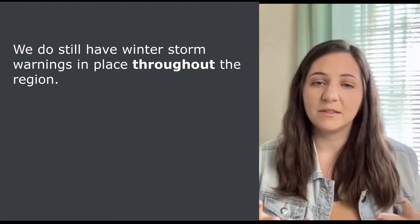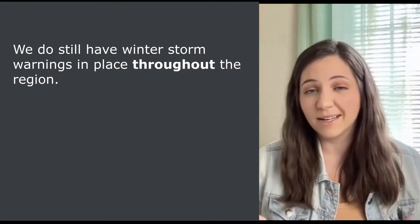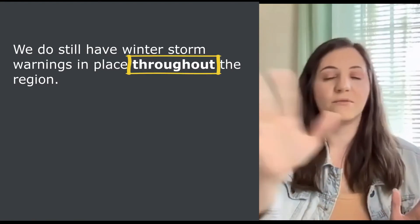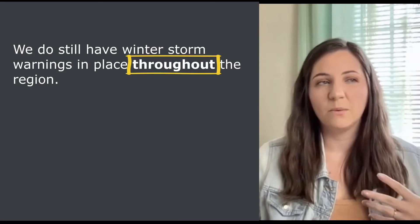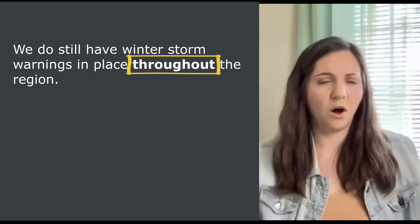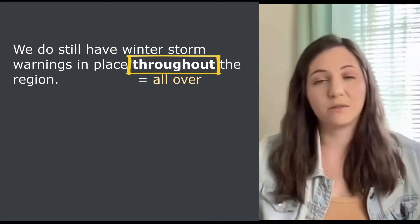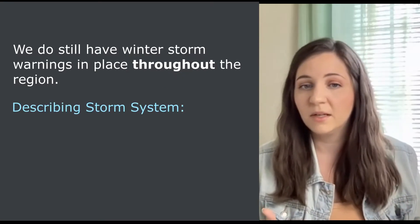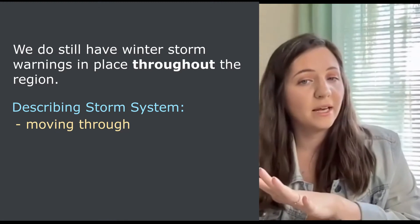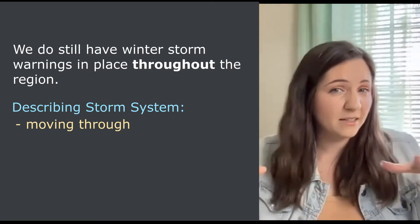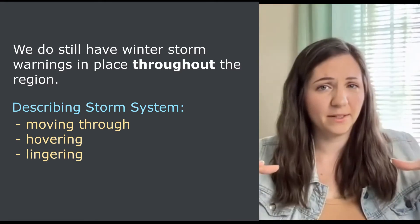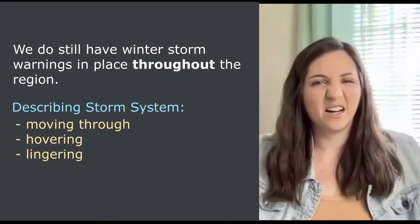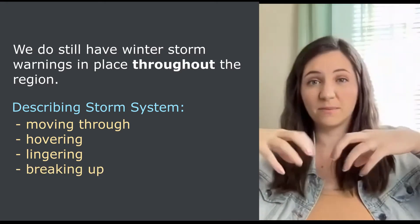So because of these storm systems, there are official warnings for the public throughout the area — this just means everywhere. We would typically say "throughout" instead of "all over the area," though you could say that too. The other ways to describe a storm system could be moving through an area, or maybe hovering or lingering if it's not moving very quickly. Or if it's starting to dissipate, you would say it's breaking up — the storm system is breaking up.